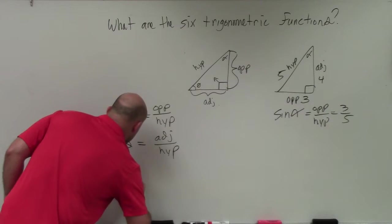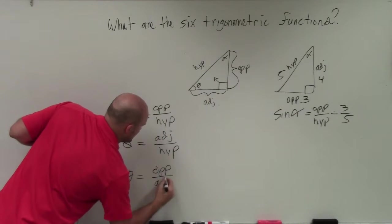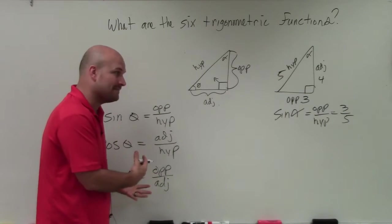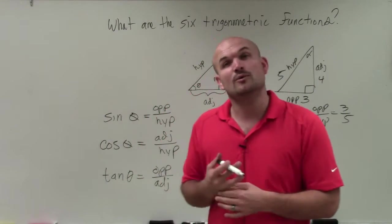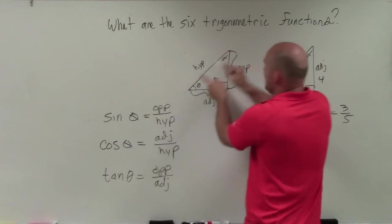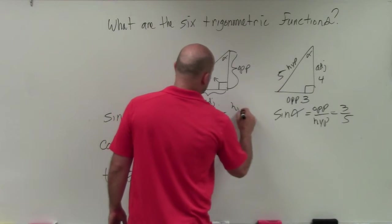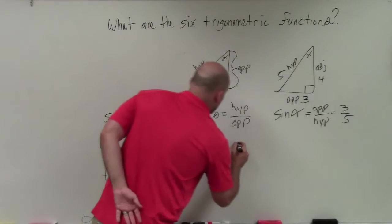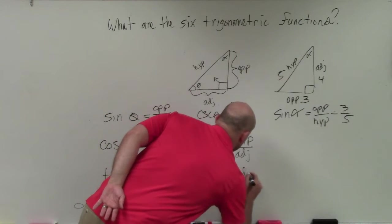The sine of an angle is the comparison of the opposite side over the hypotenuse. The cosine function is the comparison of the adjacent side over the hypotenuse. The tangent of theta is the comparison of the opposite side over the adjacent. We also have three reciprocal functions: cosecant of theta is the hypotenuse over the opposite; secant of theta is the hypotenuse over the adjacent; and cotangent of theta is the adjacent over the opposite.